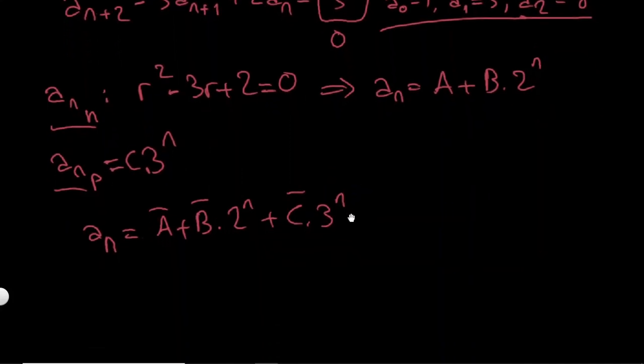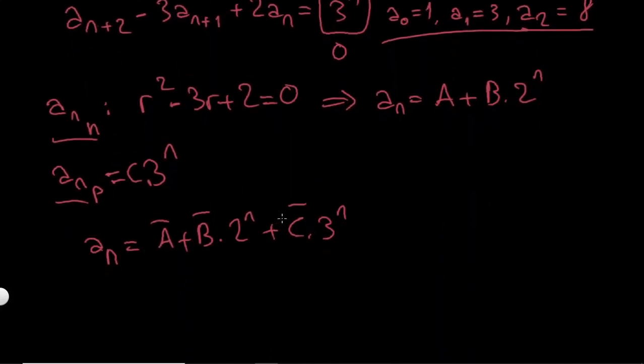So let's see if I put n equals 0, I will get A, all of these things are going to be 1. So I will have A plus B plus C. This is equal to 1, this is a_0.